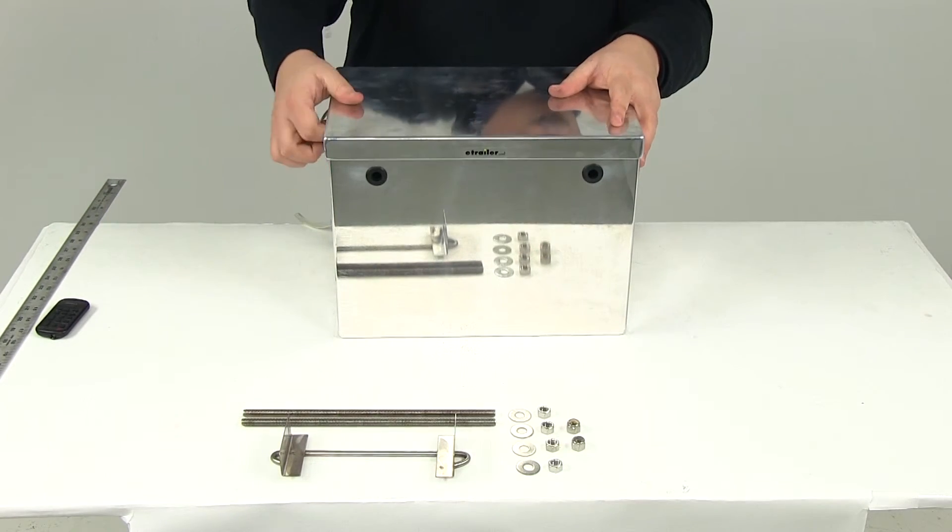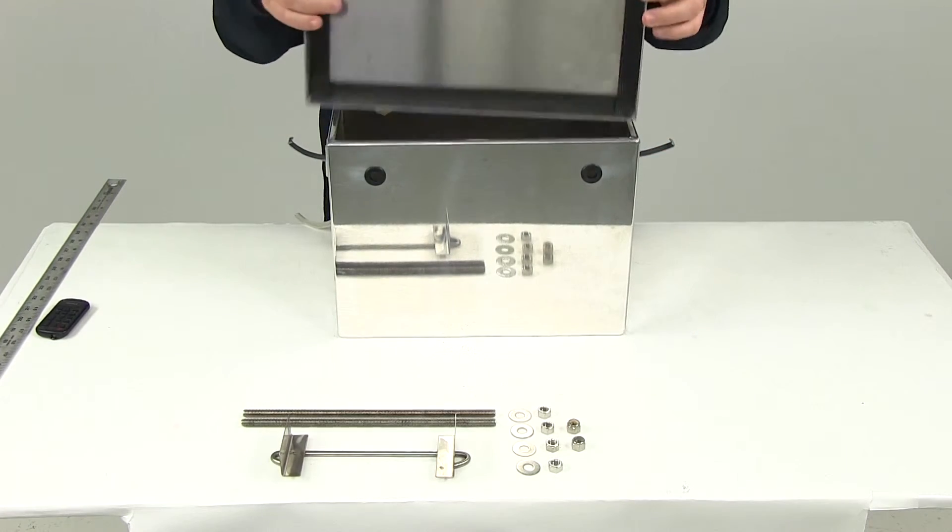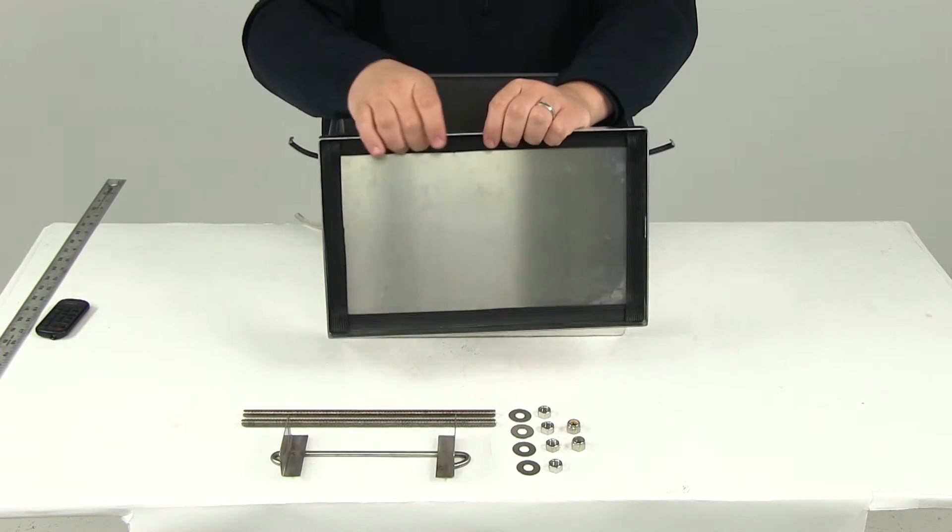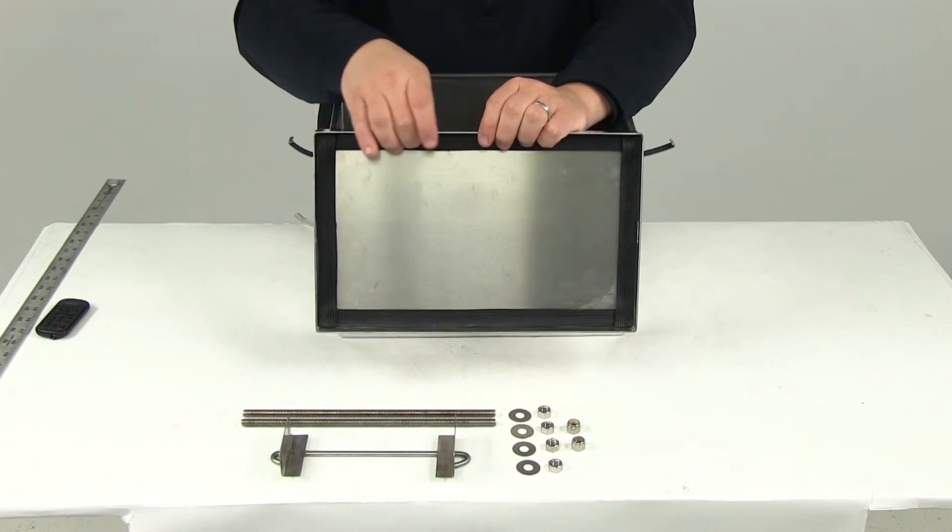Taking a look here at the underside of the lid, we're going to notice a rubber seal. This is going to help keep out any moisture, water, or dirt.